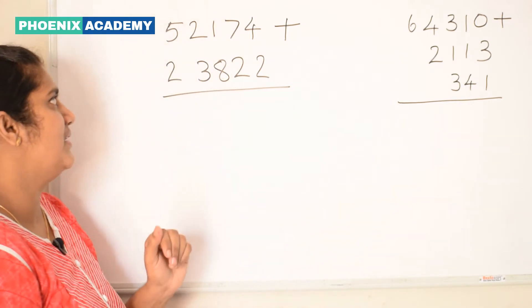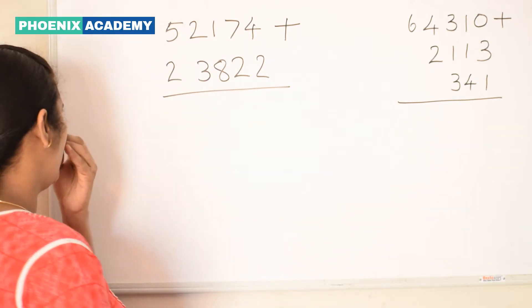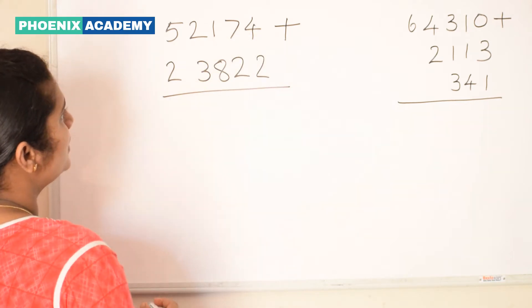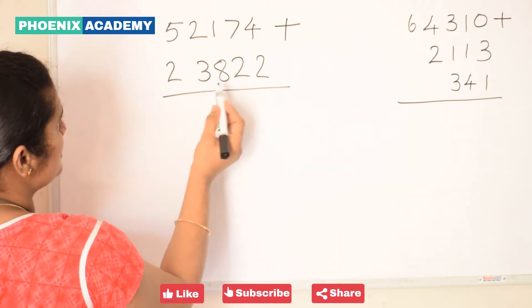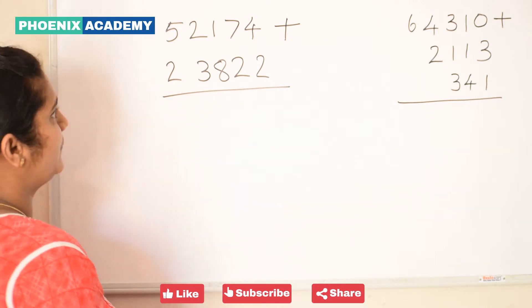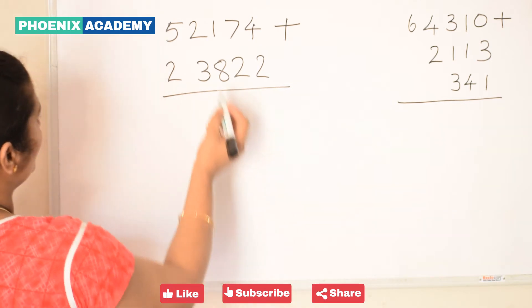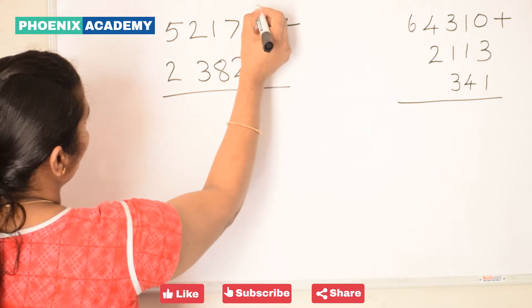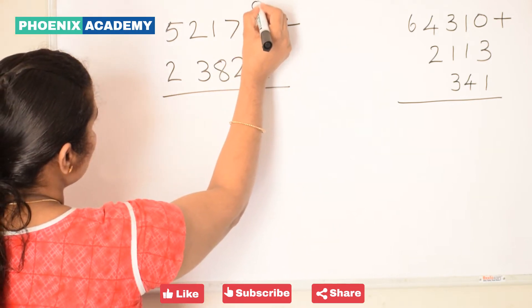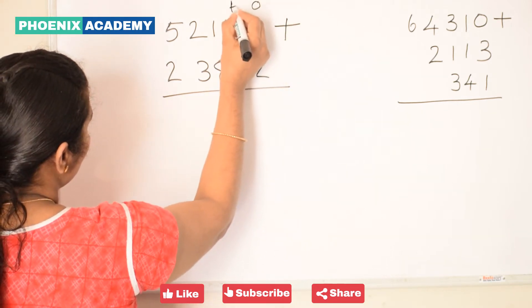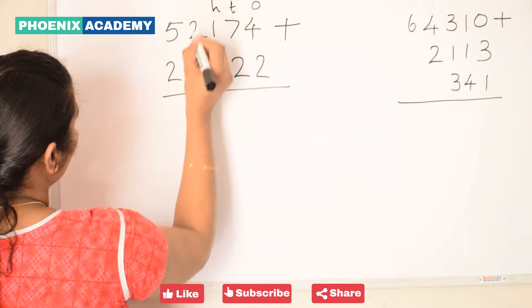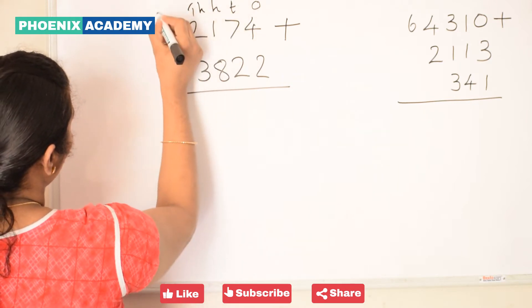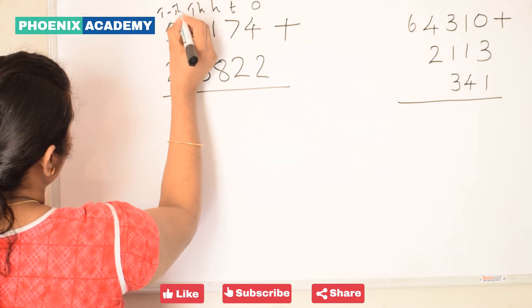Let's solve this example: 52,174 plus 23,822. 52,174 is 4 ones, 7 tens, 1 hundred, 2 thousands, and 5 ten-thousands.